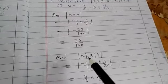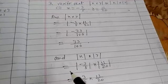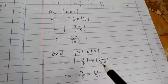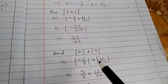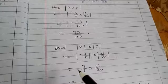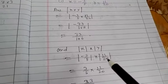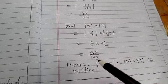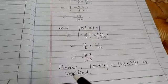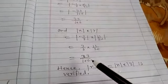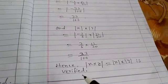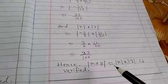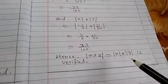And |x| · |y| equals |-3/5| · |11/20|. We put the value of x and y equal to 3/5 times 11/20, equal to 33/100. Hence, this value and this value are same. Hence, |x · y| equals |x| · |y| is verified.